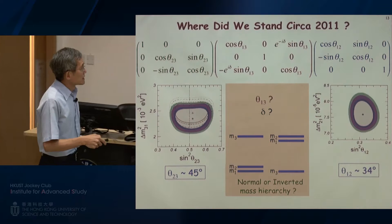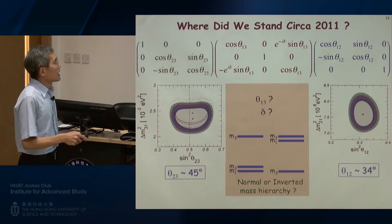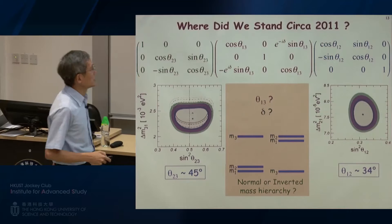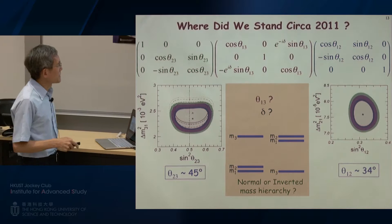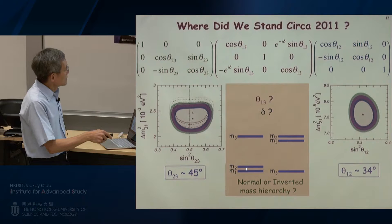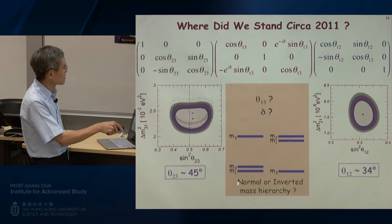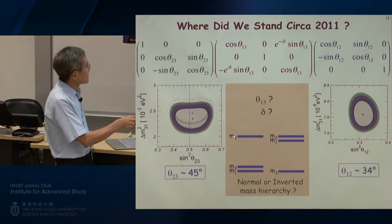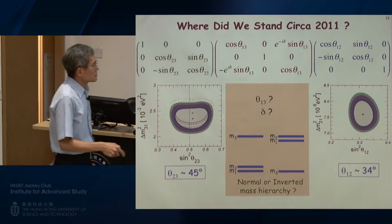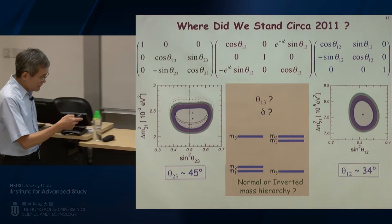However, in the year 2011, we still did not know the size of theta-13, and certainly we had no idea about the phase delta. Also, among the three masses, we had no idea which one is the lightest or the heaviest. If the masses are arranged in ascending order, this is what we call the normal mass hierarchy. Or the third one, M3, could be the lightest and the other two heavier — the so-called inverted mass hierarchy. These are the remaining questions we have to address.